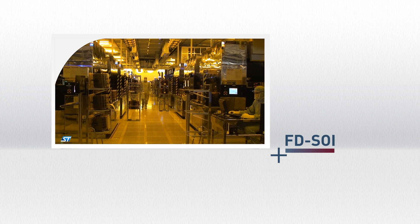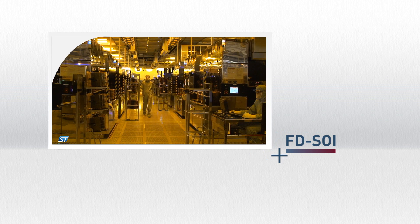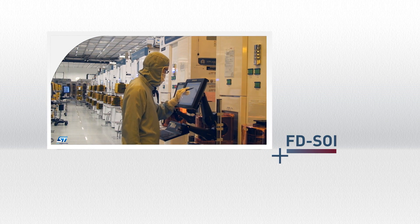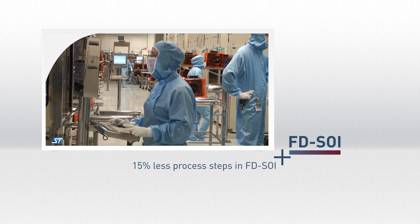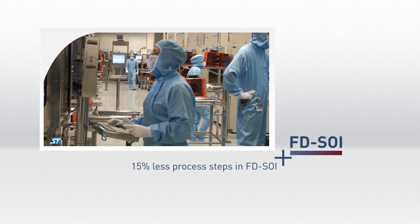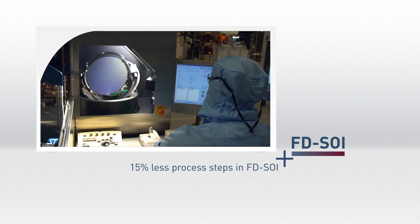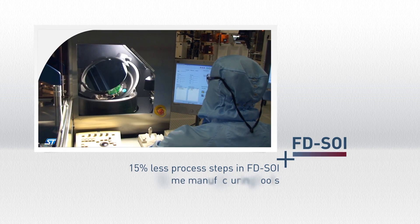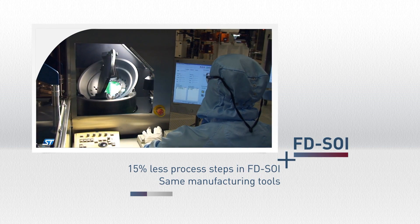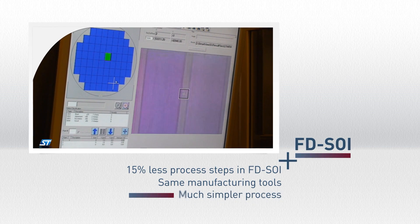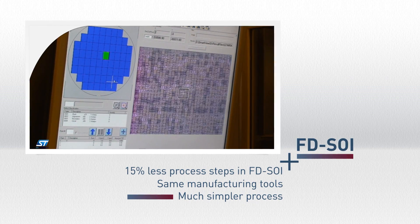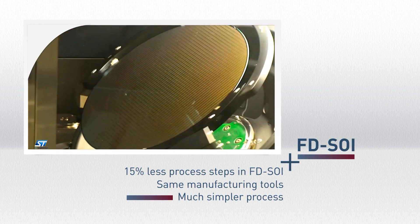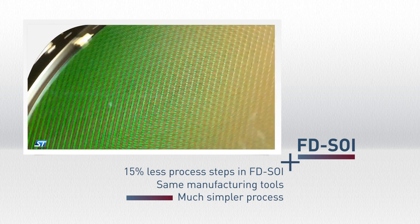FDSOI is a planar technology that reuses 90% of the process steps used in 28 nm bulk, and the overall manufacturing process in FDSOI is 15% less complex, leading to lower cycle time and reduced manufacturing costs. The manufacturing tools for FDSOI are identical to the simplest 28 nm bulk process. They are much simpler than those required for recent advanced processes, such as complex FinFET 3D technology, which is totally disruptive from a manufacturing point of view.